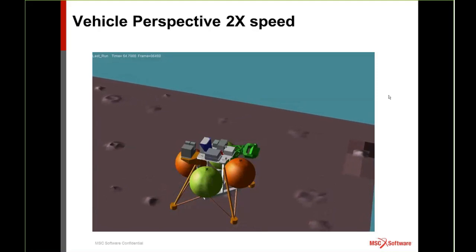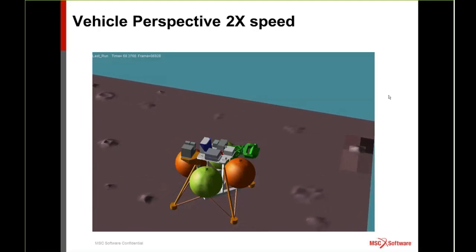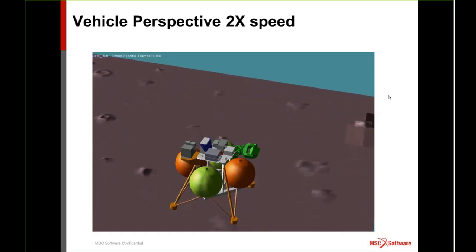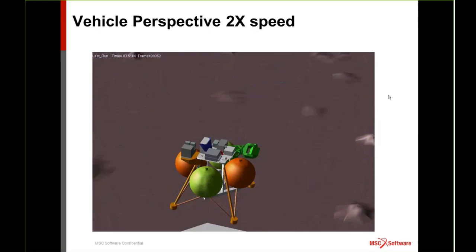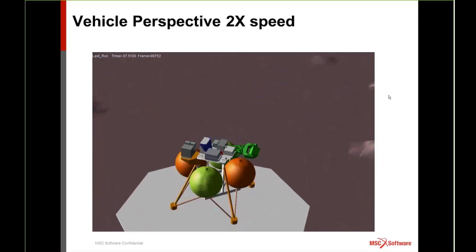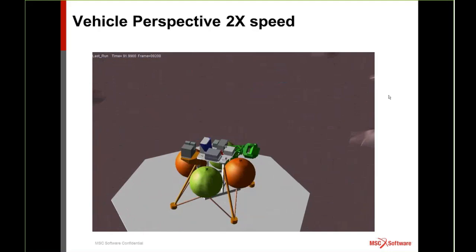This is played back at twice the speed of the actual test. That green structure you see above the orangish spherical tank on the right is the gimbal mechanism of the flash LIDAR hardware that scans the terrain and determines the optimal landing location.